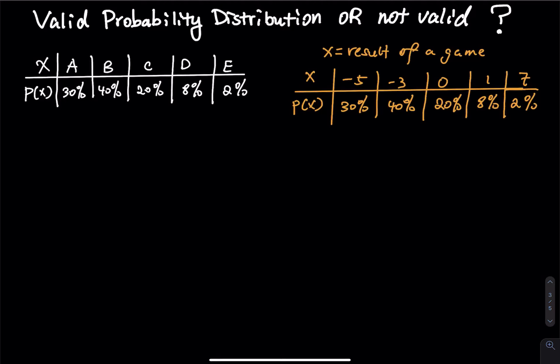When you see a probability distribution table, how do you know if it is valid or not? There are two things you have to check: first, the probabilities must be between zero and one; and second, they must sum up to one. But one thing that people miss all the time is that the random variable x must be quantitative.